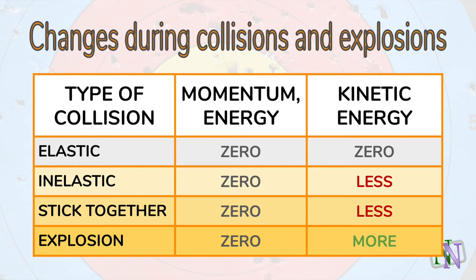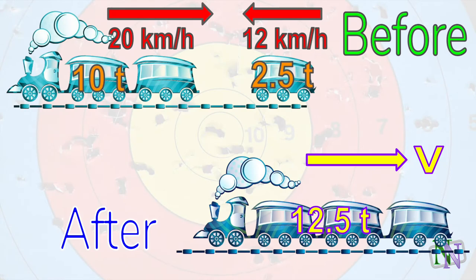The next type of collision we will discuss is when the objects collide and stick together. Here is that collision. The two parts of the train have masses, as shown in tons, and they are going to collide, stick together and move. As you know, the velocity and momentum are vectors, so their directions will be included in the calculation, using negative signs where necessary. We're going to take the direction to the right as positive.